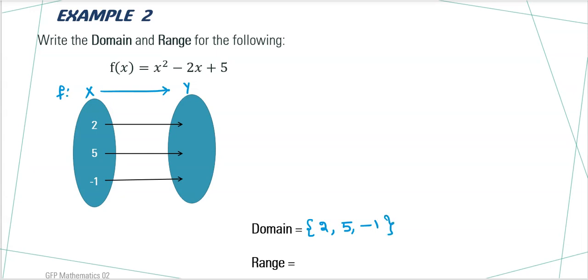Now, to find the range, what we will do? We replace the x by the numbers 2, 5 and minus 1. Let's do it. f of 2. In this case, it becomes 2 power 2 minus 2 times 2 plus 5.